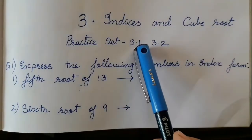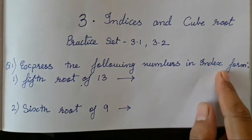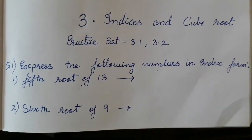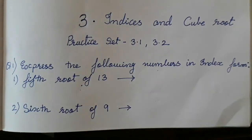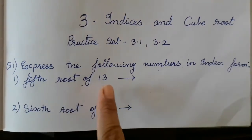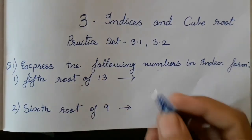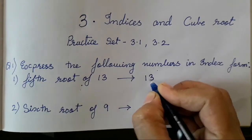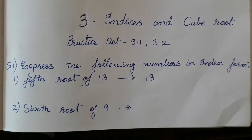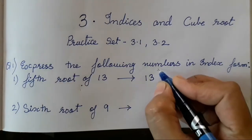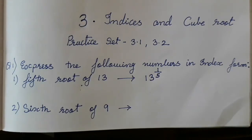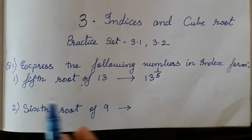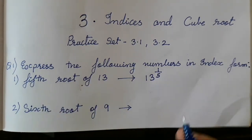Let's start with Practice Set 3.1, Question number 1: express the following numbers in index form. Index form means words have been given and you all have to write it in the form of numbers. Fifth root of 13 — 13 is the base and fifth root means the index is 1 upon 5. Sixth root of 9 means 9 raised to 1 upon 6. Square root of 256 — write 256 as the base with index 1 upon 2.